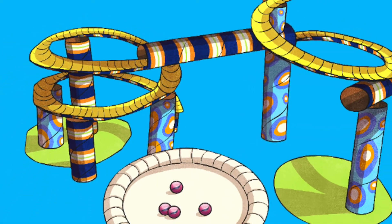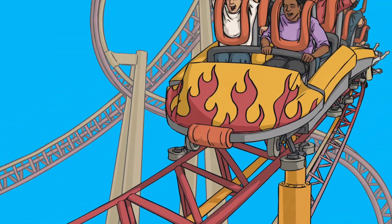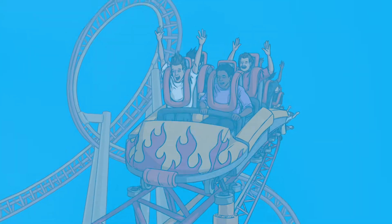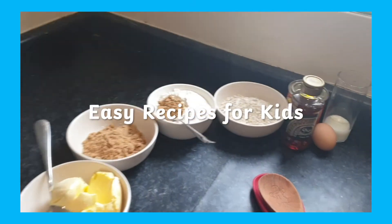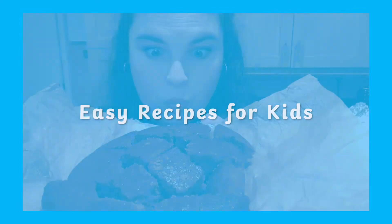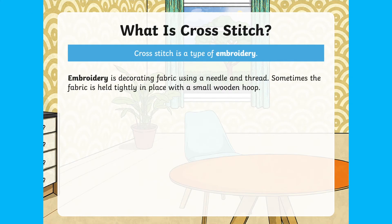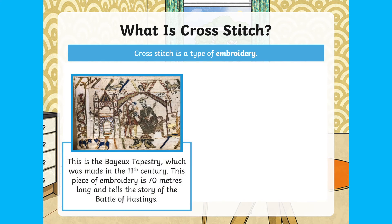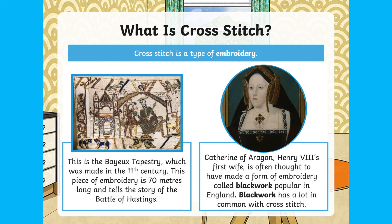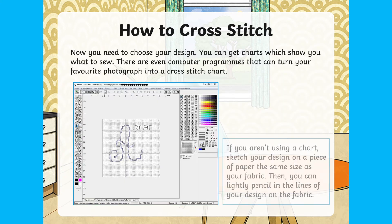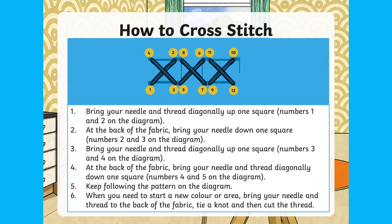Sorry in advance if your child gets excited and wants to build a real roller coaster! DT isn't just about building and constructing — it also covers food technology and textiles. We have another video on easy recipes for Key Stage 2 children which you can watch for food tech inspiration. Here we can see the how to cross stitch PowerPoint, which gives you a brief history including the fact that cross stitch is a type of embroidery, and shares how cross stitch is used and how to cross stitch.